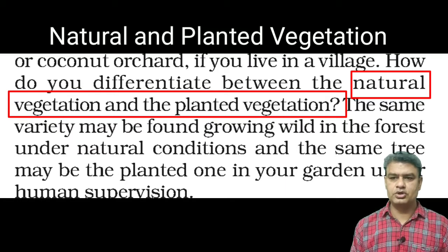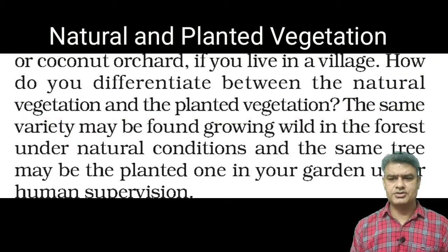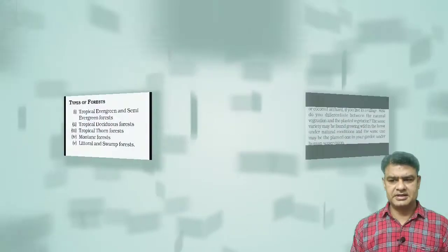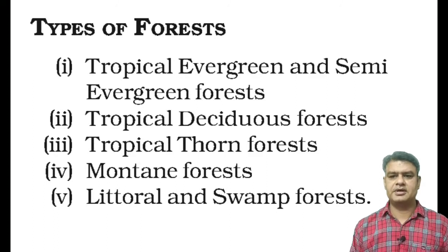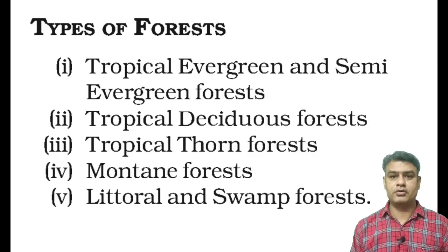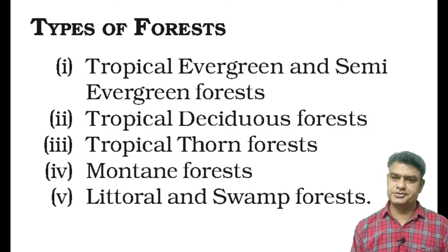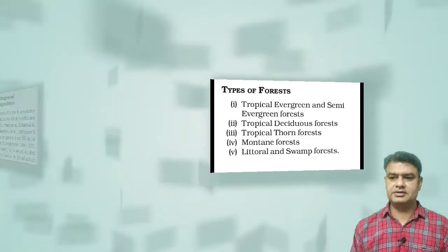The types of forests are: first, tropical evergreen and semi-evergreen forests; second, tropical deciduous forest; third, tropical thorn forest; fourth, mountain forest; and fifth, littoral and swamp forest. Now we will learn them one by one.